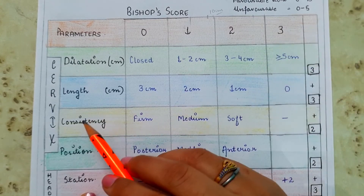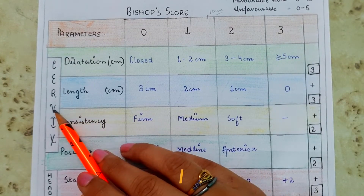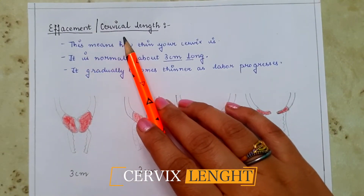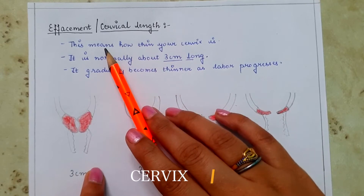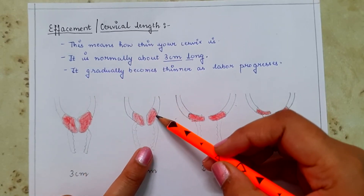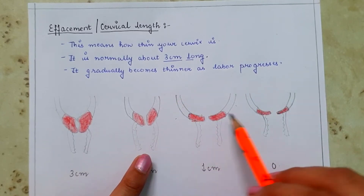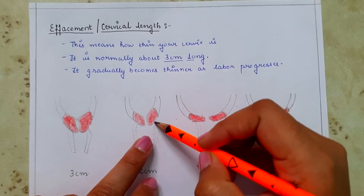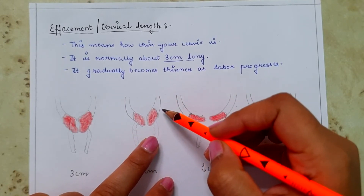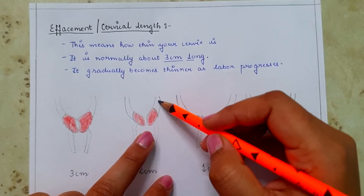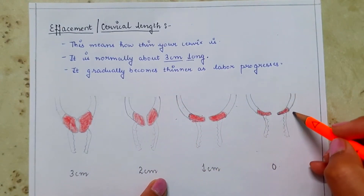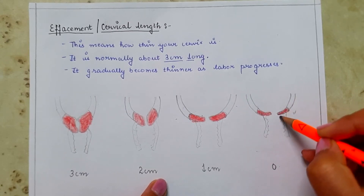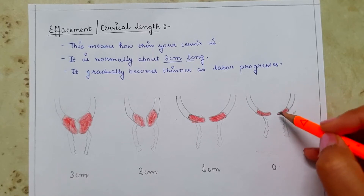The next parameter is cervical length or effacement. Effacement is the pulling up or taking up of the cervix, where the muscle fibers of the cervix merge with those of the lower uterine segment. As you can see in the diagrams, here the cervix is fully effaced and its muscle fibers have merged with the lower uterine segment.